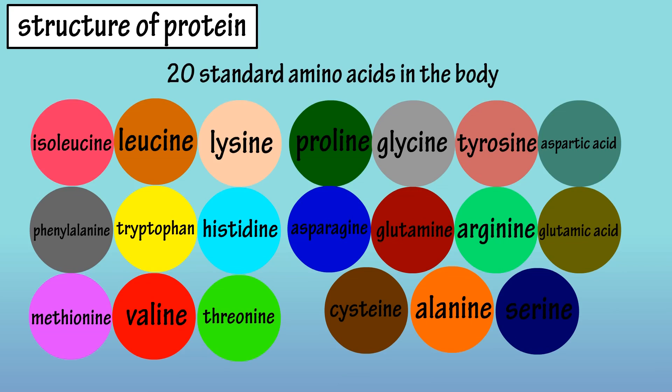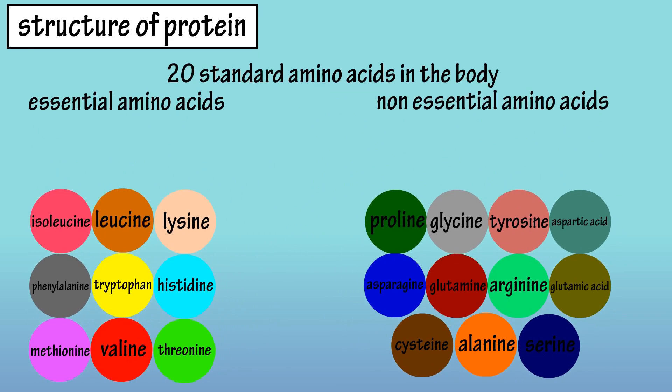There are 20 different standard amino acids that your body requires for healthy function. These amino acids are often classified as essential and non-essential amino acids. Non-essential amino acids are amino acids that our bodies can produce, even if we don't get them from the food we eat. There are 11 non-essential amino acids.